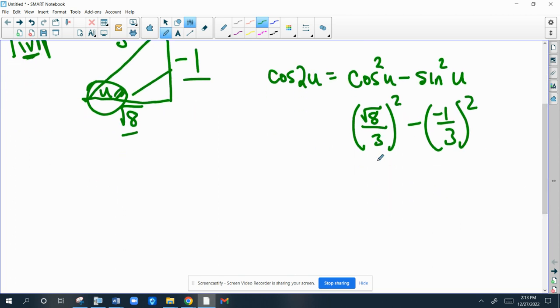So when you square the root of 8 over 3, root of 8 squared is 8. 3 squared is 9. And for the sine, negative 1 squared is positive 1. 3 squared is 9. 8 ninths minus 1 ninth is 7 ninths. And there you go.